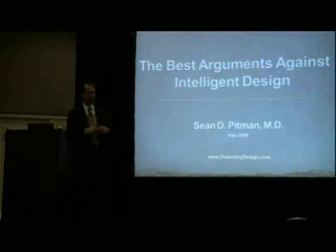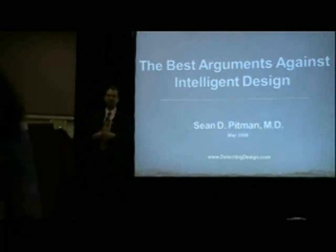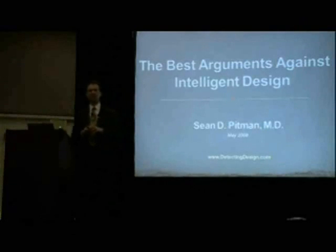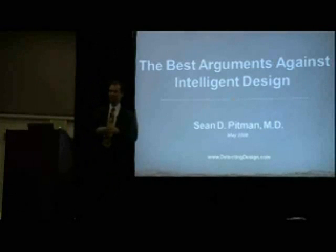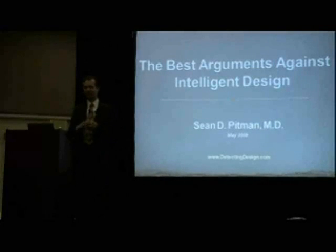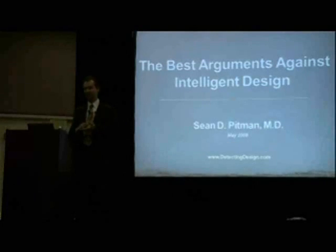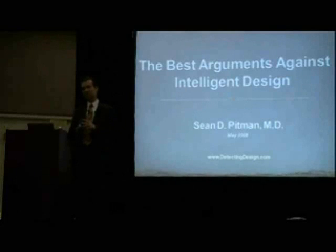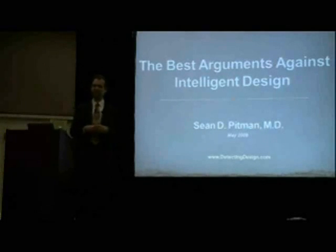This topic is best arguments against intelligent design, at least what I consider to be the best ones. For me, the best arguments against my position are genetic. My basic position is intelligent design — there is some intelligence out there. I call it God, but at the very least it's an intelligence that produced us and all biological systems of complexity. What are the arguments against my position? That's basically what I'm going to present here, and then what are my answers to those arguments?